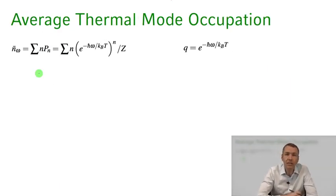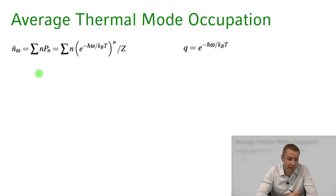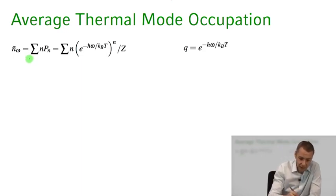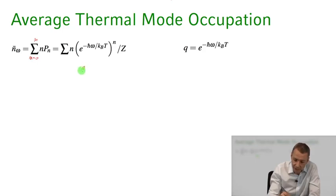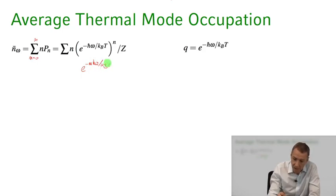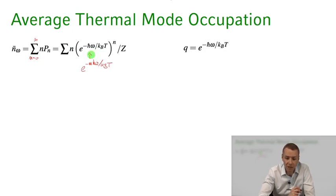Let's calculate the average number of photons in such a thermal field state in a single mode characterized by frequency ω. We take the sum from n equals zero to infinity of n times the probability of being in that state with n photons, which is n times e to the minus nℏω divided by k_B T — equivalently e to the minus ℏω divided by k_B T to the power of n.